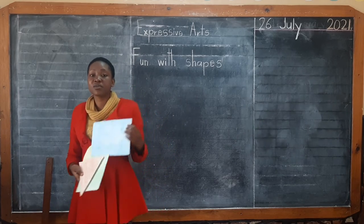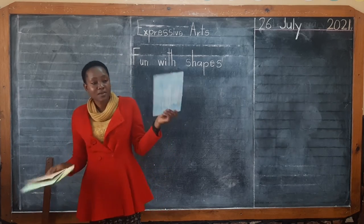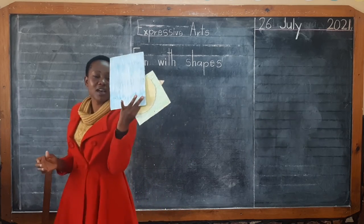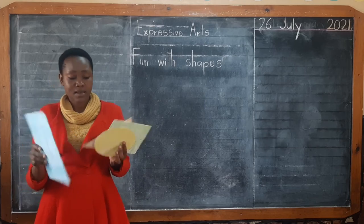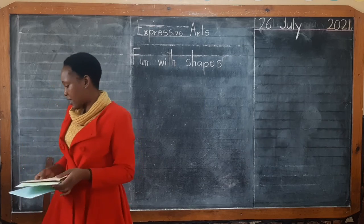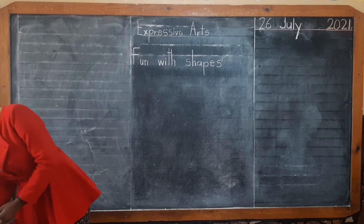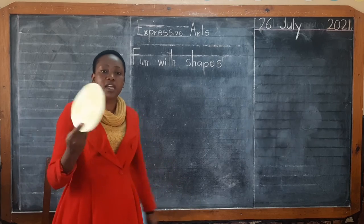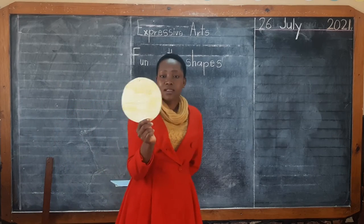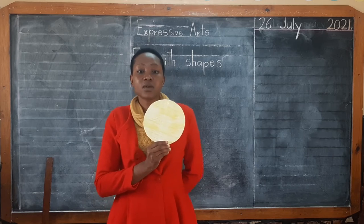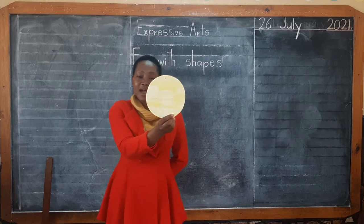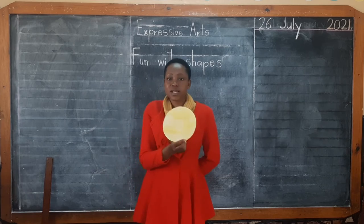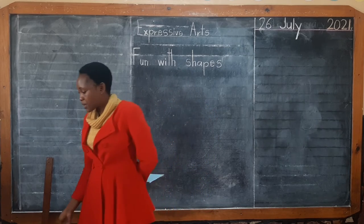We are going to be having fun with these shapes. I have different shapes here and I want you to help me identify them. So this one here is a circle — this shape that I am having here is a circle.